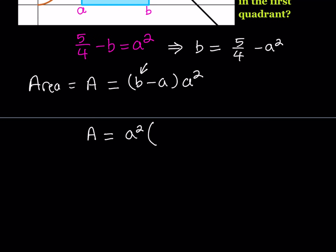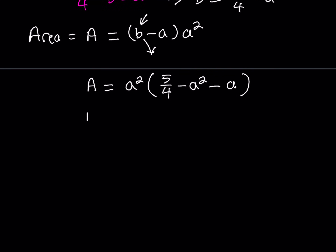Now let's substitute into our area expression and write the answer in terms of a only. The area can be written as a squared times the quantity (b minus a), where b is replaced by 5 fourths minus a squared, giving a squared times (5 fourths minus a squared minus a). Let's distribute this to make differentiation easier: A equals 5 fourths a squared minus a to the fourth minus a cubed. This is the area of the rectangle in terms of a.